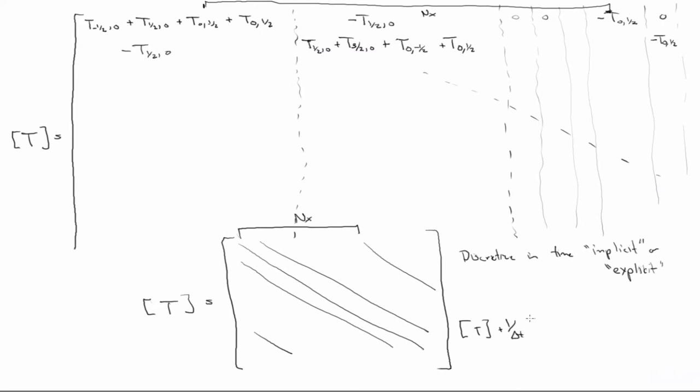1 over delta t times b plus q. So this is exactly like before. If you can't read that, it's just exactly as in 1D. It's the same exact equation as we got in 1D. The main difference is the form of the matrices themselves.